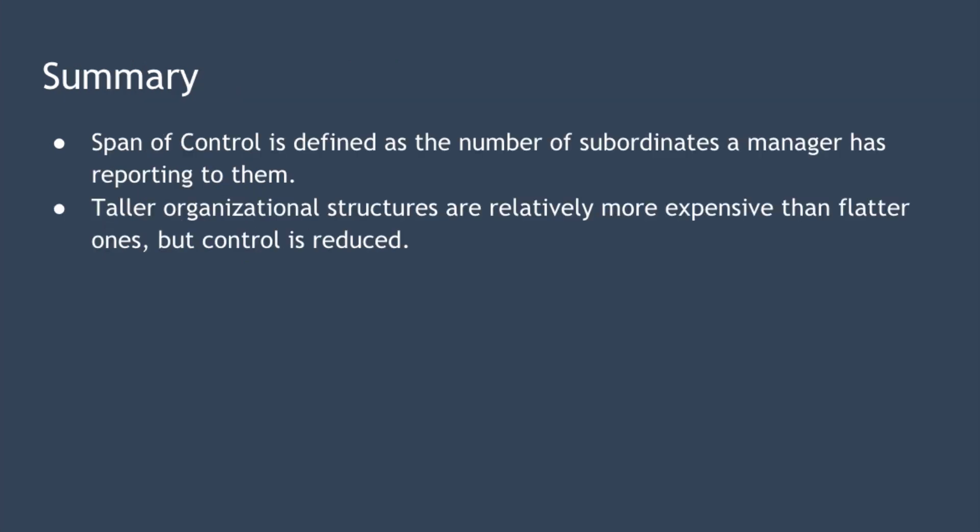So in summary, span of control is very simply defined as the number of subordinates a manager within an organization has reporting to them. Taller organizational structures are relatively more expensive than flatter and wider structures due to the increased number of managers required. However, taller structures give much more control over the work of subordinates. Ultimately, there is no right or wrong span of control, and it is up to each organization to find the right balance that works best for itself. That's it for this lesson — really hope you enjoyed it, and I look forward to speaking to you again soon.